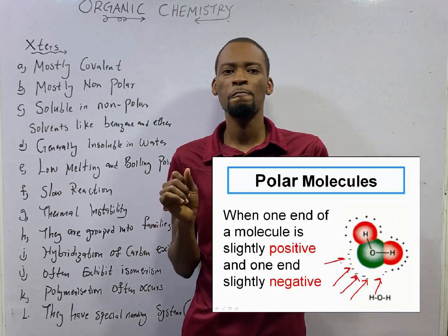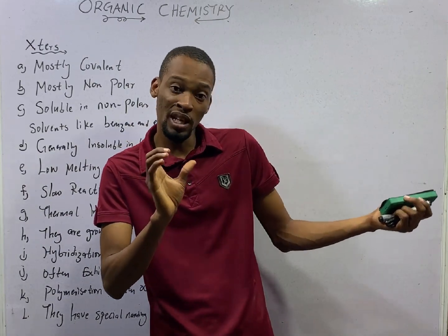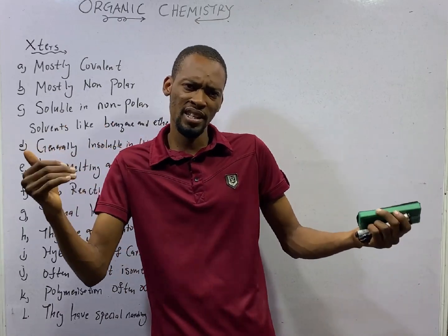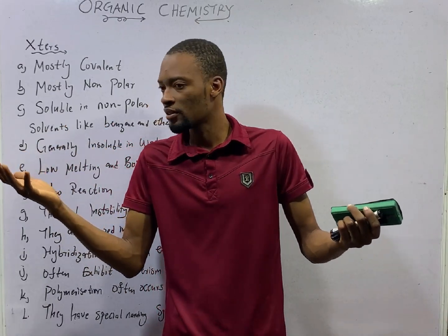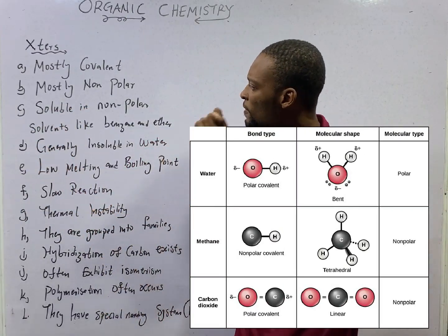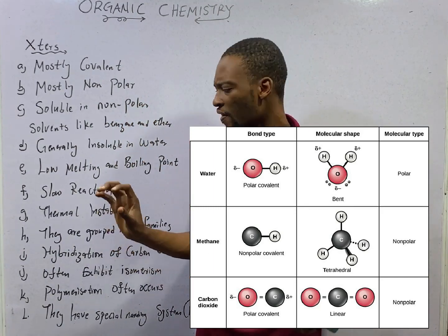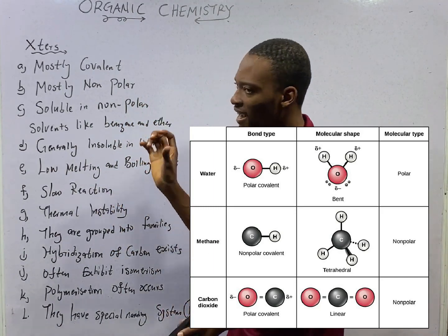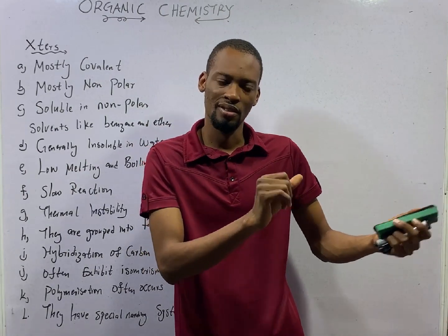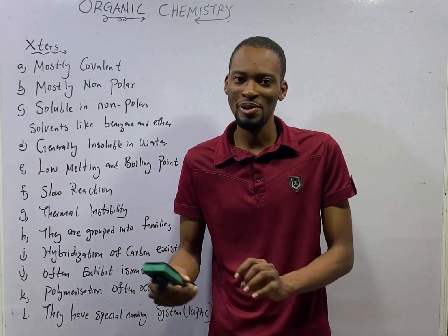The reason they are mostly non-polar is because of the covalent bond. Polarity is when there is a net charge in compounds — a compound begins to have a particular positive or negative charge due to unequal sharing of the electron pair or due to distortion in the charges. But mostly these compounds are non-polar. These are general characteristics, and there are certain compounds that are exceptions, which we shall also look at as time goes by.